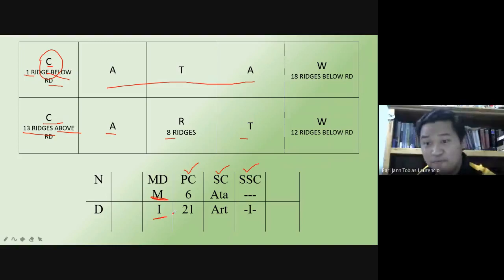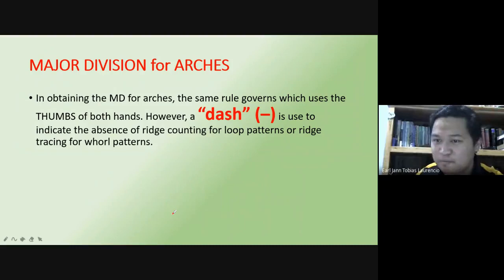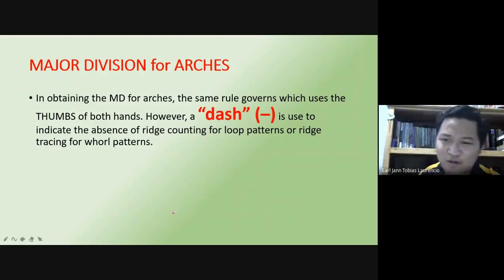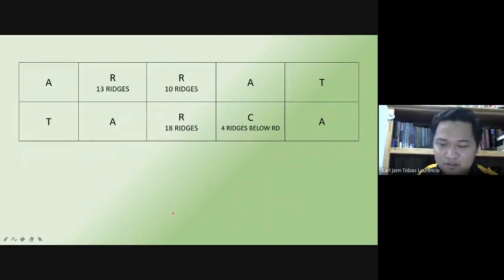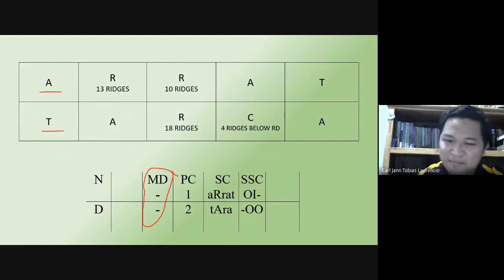For arc patterns in the major division, you apply the sub-secondary rule for arcs, which means placing a dash. If there is an arc on the thumb, a dash is placed. So the major division for arc is simply a dash — very simple.